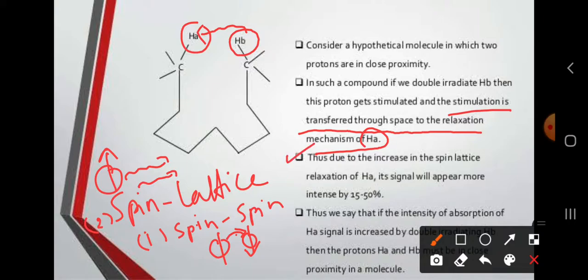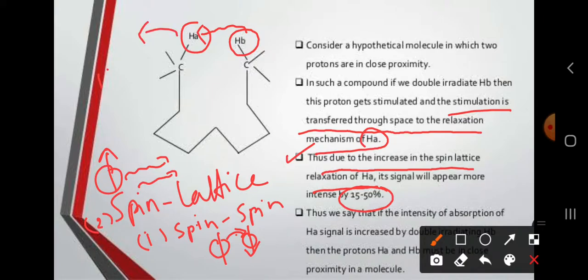Due to the increase in spin-lattice relaxation of HA, the signal intensity of HA is increased by approximately 15% to 50%. This is the NOE effect — the intensity of the HA peak increases significantly.